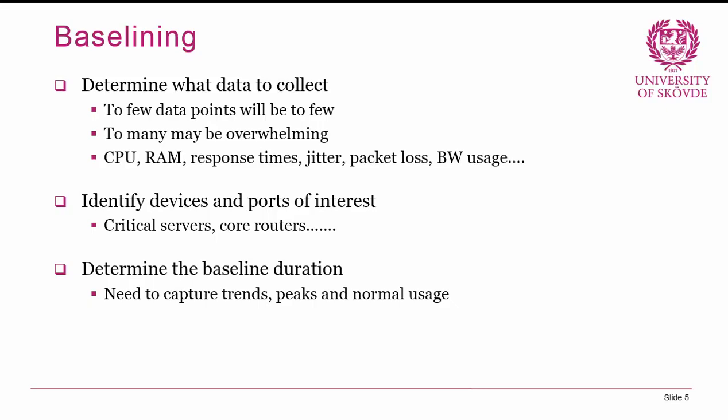Next, you need to determine the baseline duration. You cannot just take 10 random minutes from a Saturday and do a baseline, because it would say that everything is fine — unless your company works a lot on Saturdays. Instead, you need a baseline duration that is long enough to fully capture trends, peaks, and normal usage. You want to see the normal behavior of your network as an average, but you also want to see the peaks. For instance, if your company has something important that happens every Tuesday afternoon and there is a large peak then, you need to capture that in your baseline because it may be critical to the organization that the network facilitates that specific event.